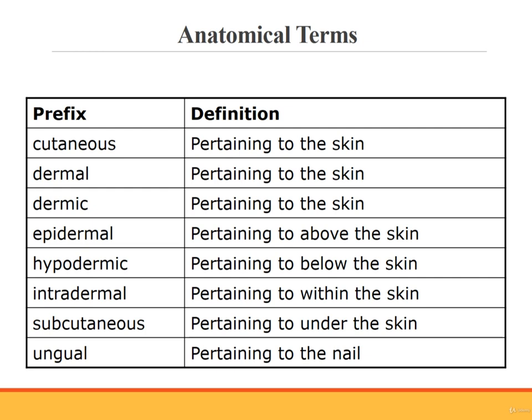This table lists some of the anatomical terms used when discussing the integumentary system. Note that these terms are adjective forms, all of which include 'pertaining to' in the meaning: cutaneous, dermal, dermic, epidermal, hypodermic, intradermal, subcutaneous, and ungual.